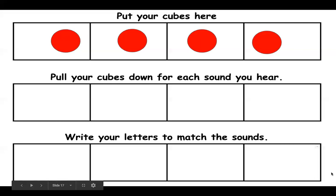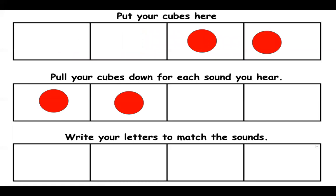This is what they look like. Remember, if you're at home and you don't have a copy of this, you can always draw some squares onto a piece of paper and use cereal, M&Ms, crackers, anything like that for your counters. Our first word — we're going to say the word dog. Go ahead and tap dog: D, ah, g, dog. Now we're going to pull our counters down for each sound: D, ah, g, dog. Now we're going to go ahead and write our letters for each sound: D, ah, g — D, O, G.